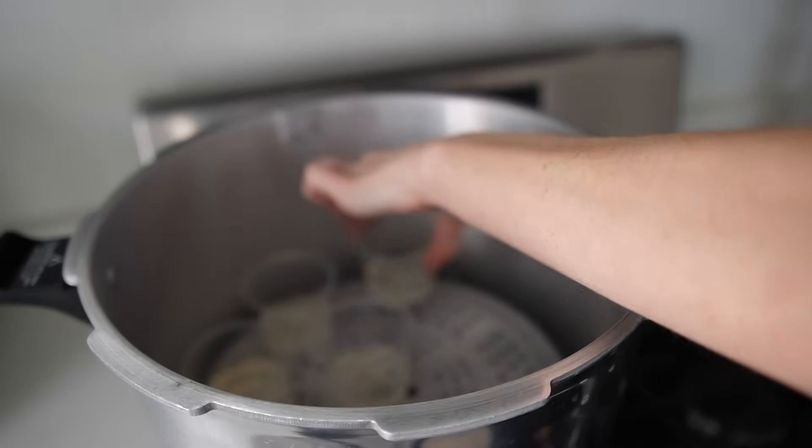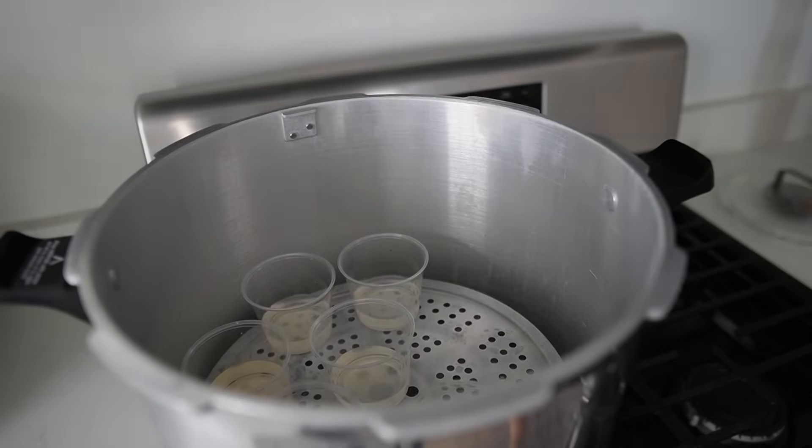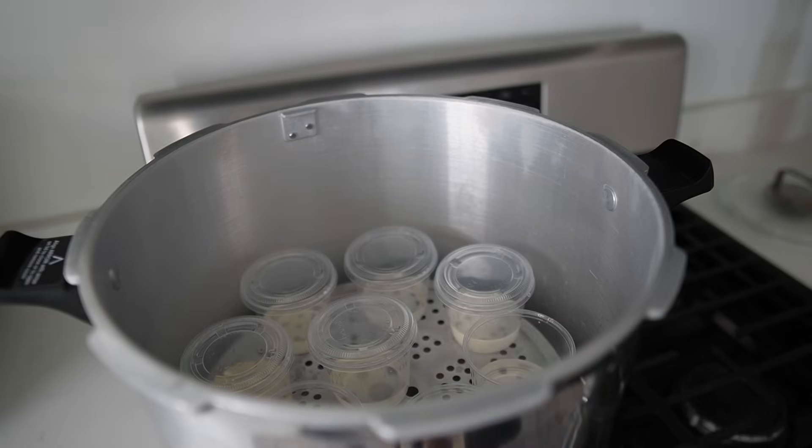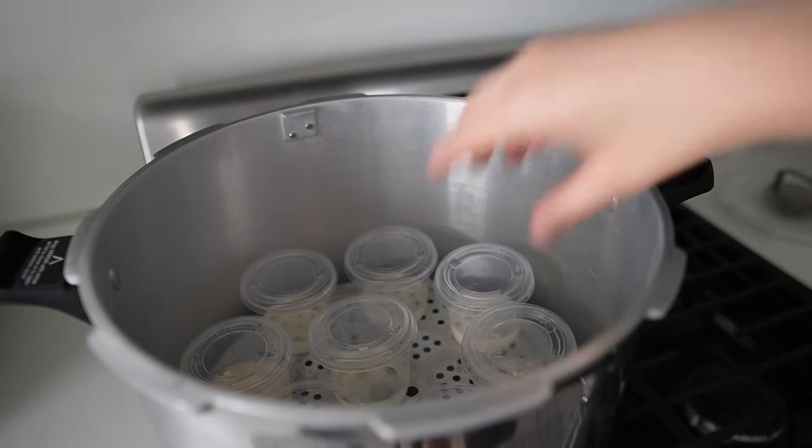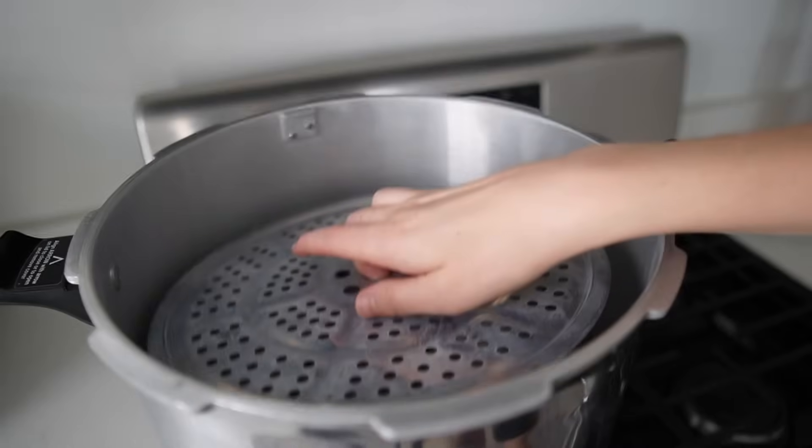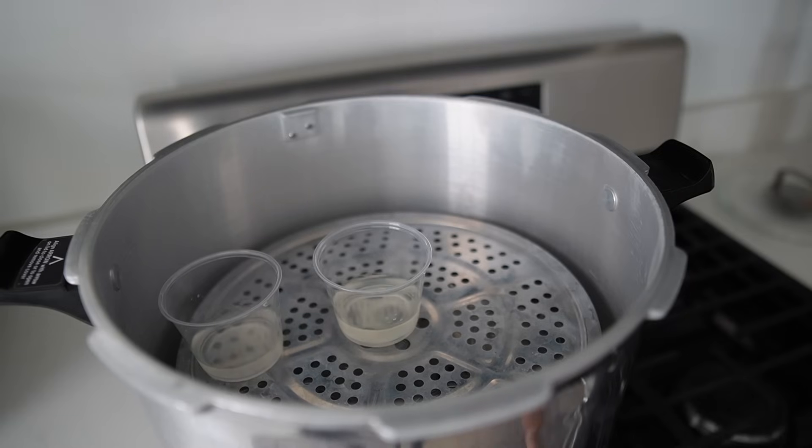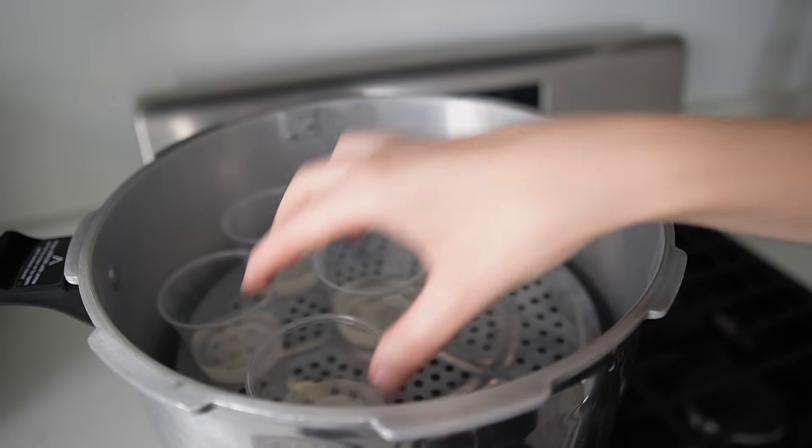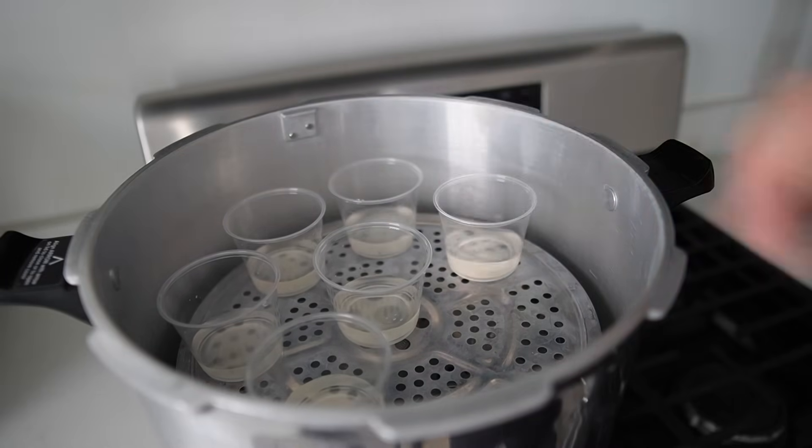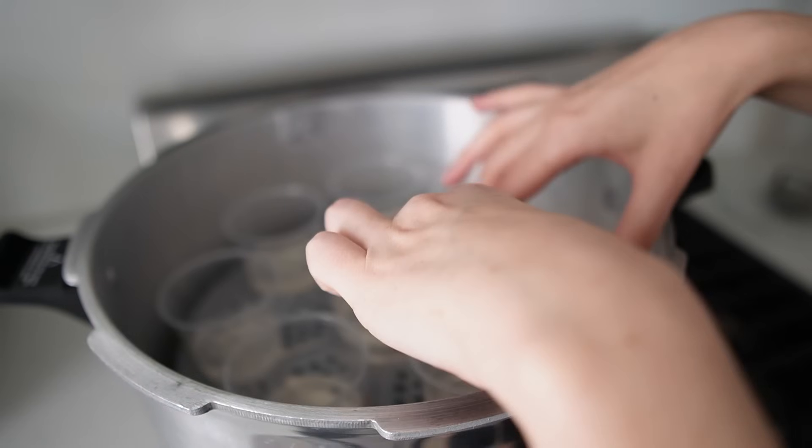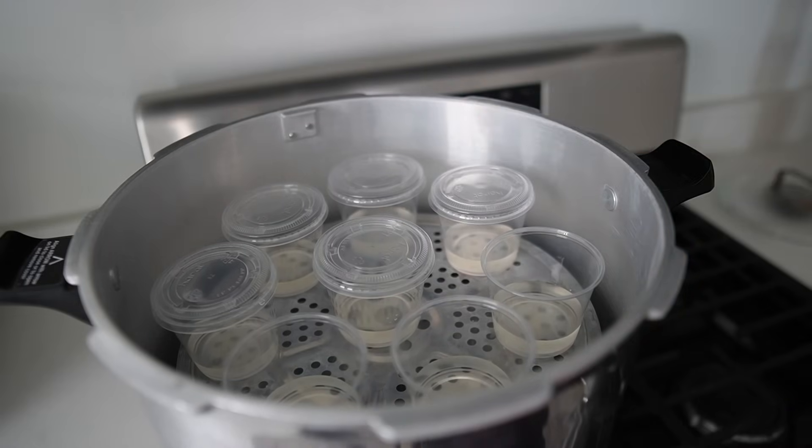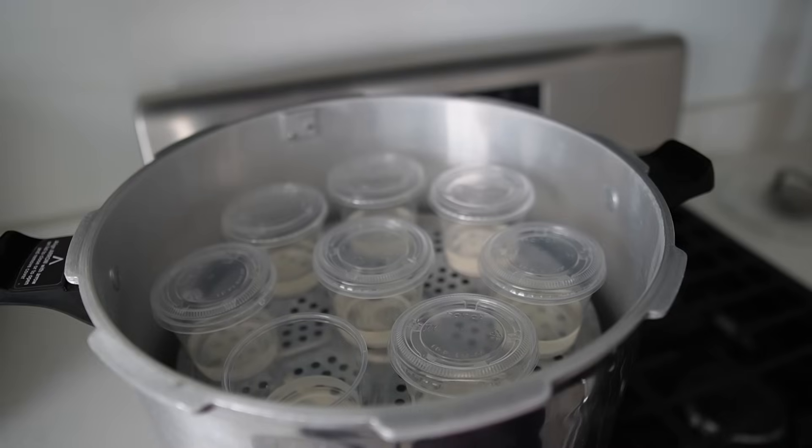These containers are going to get cooked at 15 psi for 15 minutes. When I use a pressure cooker to sterilize media, I use canning shelves to create multiple layers of containers inside of the pressure cooker so that I can sterilize the maximum amount possible, which, in case you're curious, is 24, if you're using the exact containers and pressure cooker that I have.